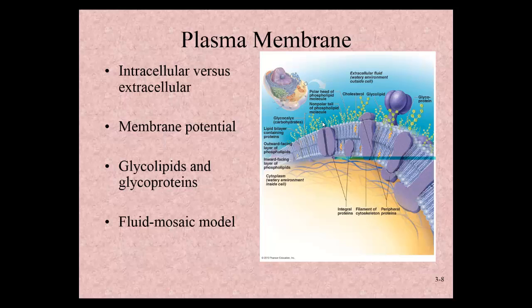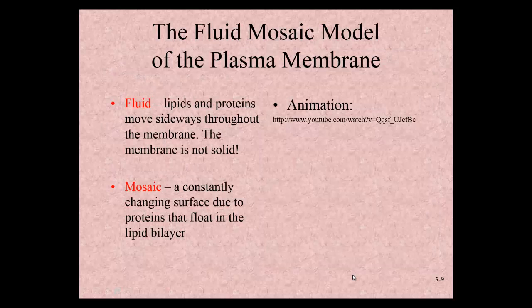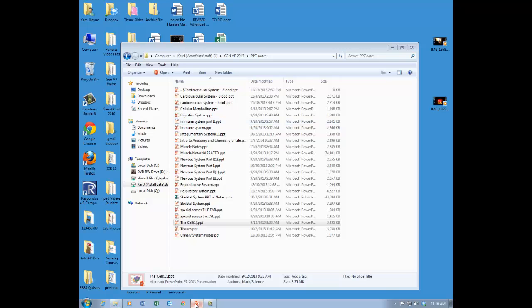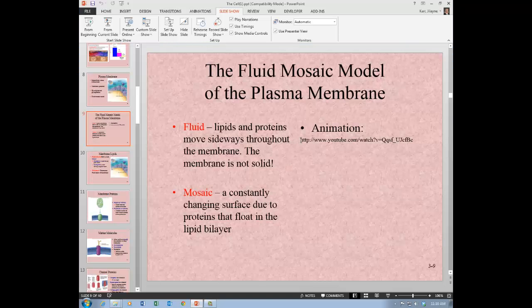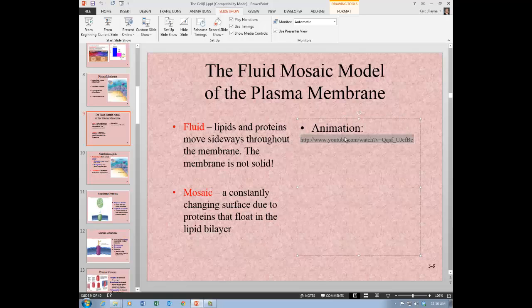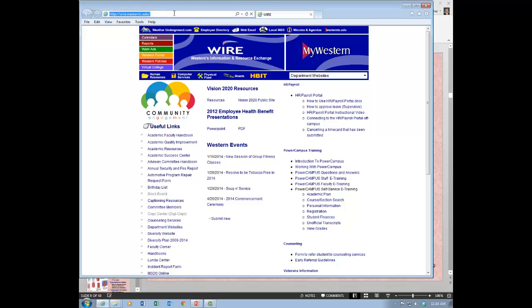Looking at the overall structure of the cell, we say it is a fluid mosaic structure. Fluid refers to the fact that the surface of the cell is changing — it's not a constant structure, and things can move about the surface. The mosaic refers to the fact that it's made up of a variety of different molecules. I have a video animation to demonstrate this.